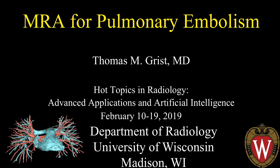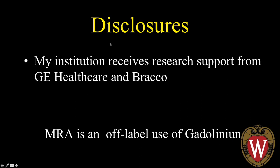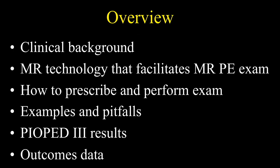I'd like to talk about an area of MRA that we're using quite a lot at our institution — using MRA for diagnosis of pulmonary embolism. It's something a little counter to conventional wisdom, but we've found it very helpful in our practice. Disclosure: my institution receives research support from GE Healthcare and Bronco Diagnostics, and this represents an off-label use of gadolinium contrast agents. I'll cover clinical background, MR technology, how to prescribe and perform the exam, examples and pitfalls, PIOPED 3 results, and our own outcomes data.